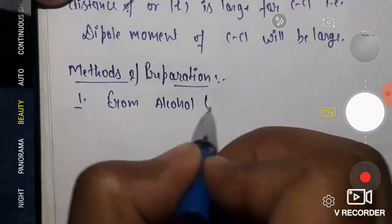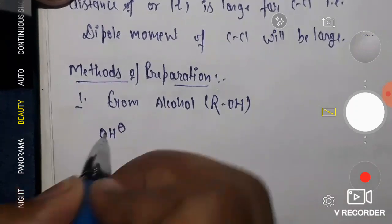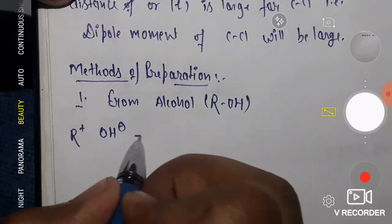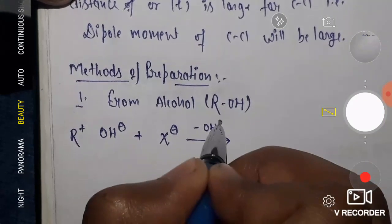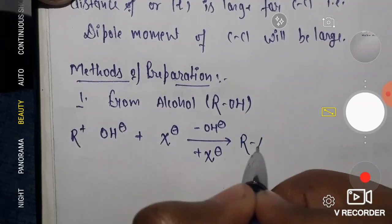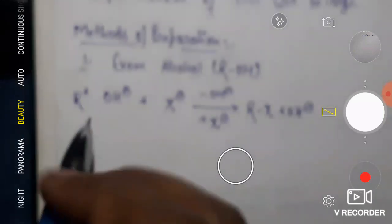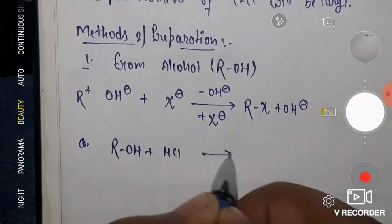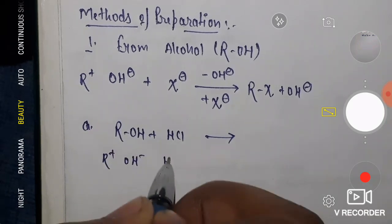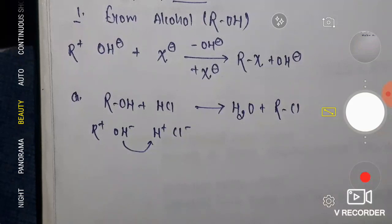In ROH, the OH group carries a negative charge and R carries a positive charge. When we add any source of X⁻, the OH⁻ moves out and RX is formed. For example, if we add HCl to ROH: R⁺ and OH⁻ on one side, H⁺ and Cl⁻ on the other — they combine to give water and RCl.